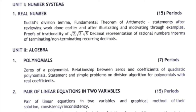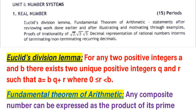In unit one, the topic is number system and you can find the chapter named Real Numbers in your NCERT maths book. At first, let's discuss the topics in this chapter. At the very beginning of class 10 you learned about Euclid's division lemma: for any two positive integers a and b, there exist two unique integers q and r such that a equals bq plus r, where 0 ≤ r < b.